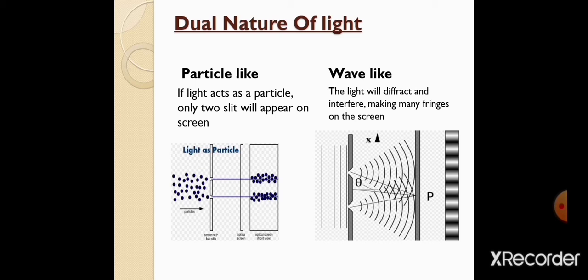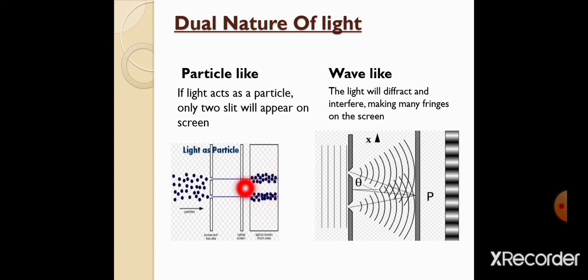Yaani ke jo light hai us ki dual nature hai — as a particle aur as a wave. Particle-like nature discuss karein to light jo hai woh photon se mil ke banti hai, aur har ek photon massless hota hai aur unke paas ek specific energy bhi hoti hai. Jab light slit ke andar se pass karegi, to screen par us ki intensity find out kar sakte hain. Light as a particle behave karti hai photoelectric effect, Compton effect, aur pair production ke andar.